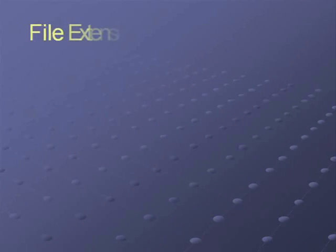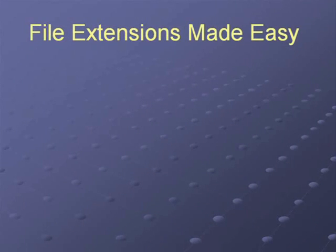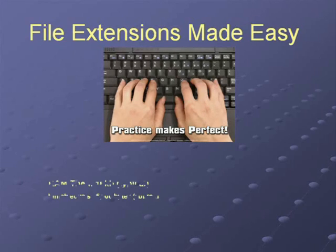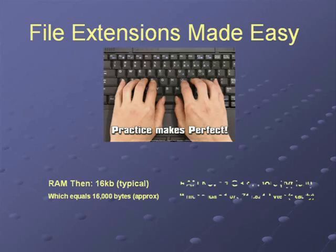File extensions are like most things with computers — they appear more complicated than they really are. An extension is just a name, names that have been abbreviated, largely because the early developers did not much like to type. Plus, early computers were very limited in resources. Saving bytes of data was a priority. So let's look at a few examples.